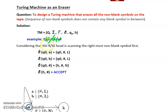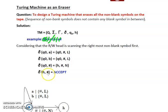Moving further left, we encounter the hash. When on state Q0 and a hash is encountered, the state changes to H and we remain on the same cell. We are now on the hash in state H, which means the string is complete and accepted.